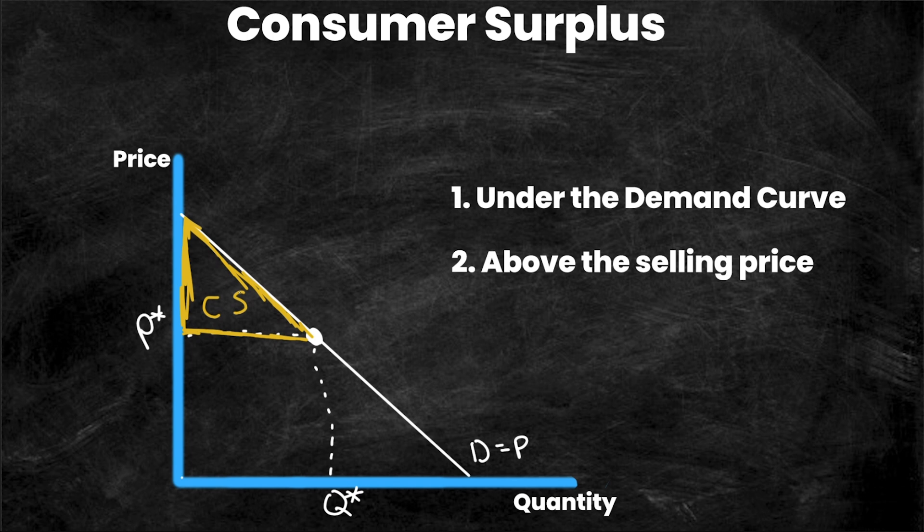The more value you place, the higher your reservation price or the higher your willingness to pay. In my example with Doritos, you had a reservation price of $5 per bag and you would not pay more than that. However, every dollar less you pay is surplus. That's extra money in your pocket. You got your good and it was cheaper than you were actually willing to pay for it.